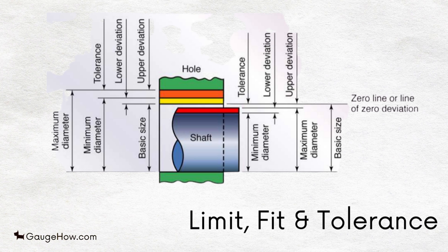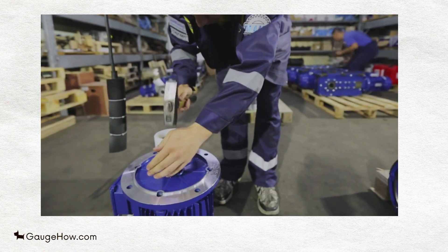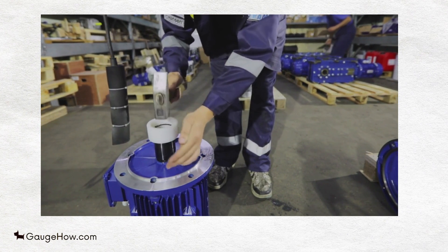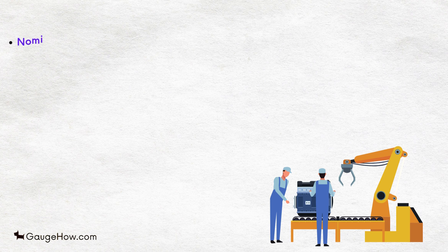Limit, Fit and Tolerance. A large number of parts of exactly the same dimension cannot be produced commercially. The actual dimension is always a little larger or smaller than the desired ones.